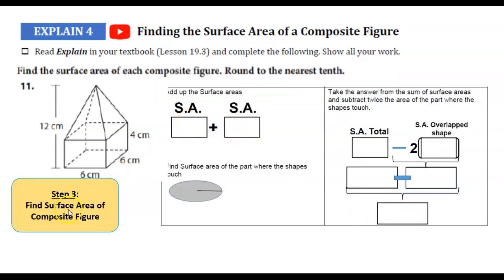Now you will notice that we're going to find the surface area of our composite figure. You'll notice that we're adding up our surface areas we just found. So take a moment and do that now. And the next thing we're going to do is we're going to find the surface area where these shapes touch. They kind of touch at this four-sided shape. So we are going to find the surface area for that.